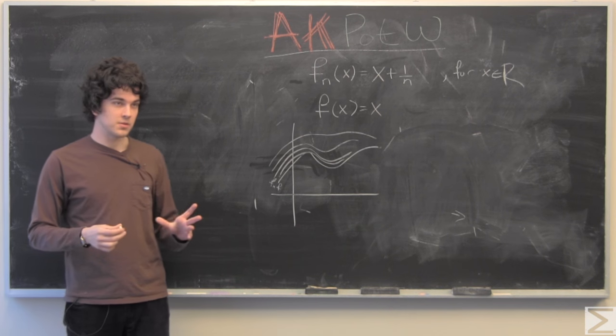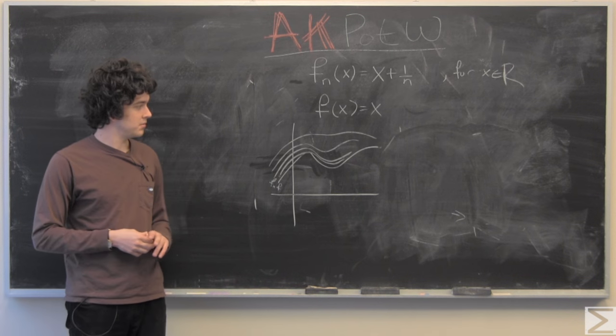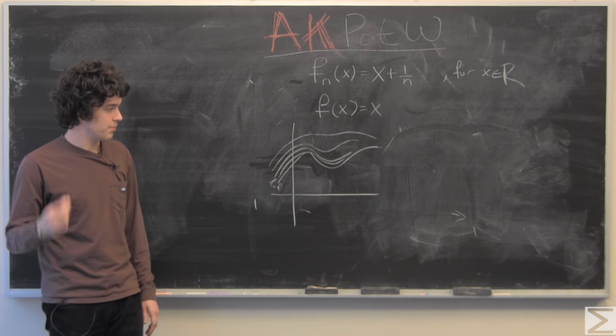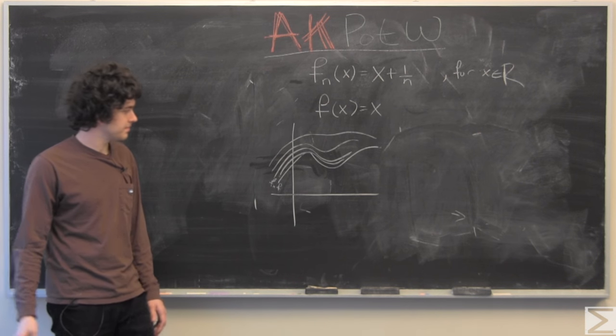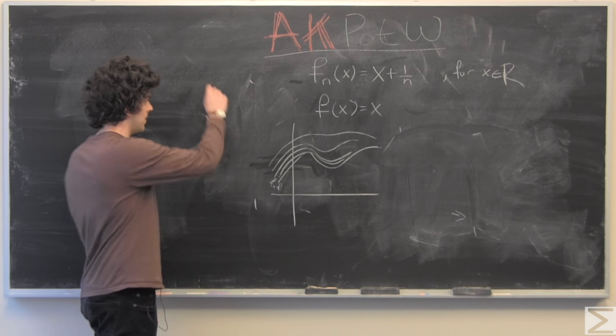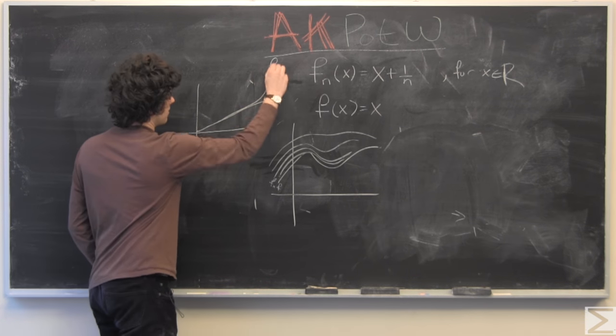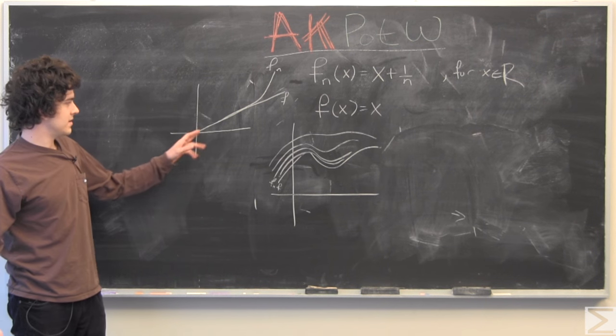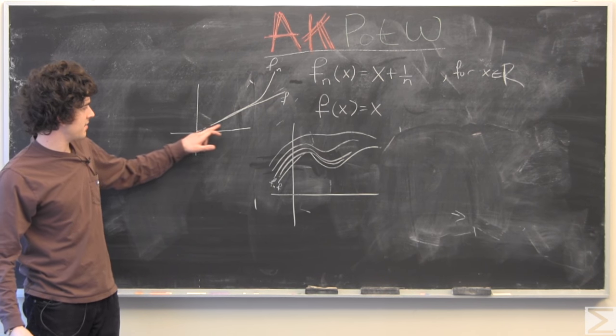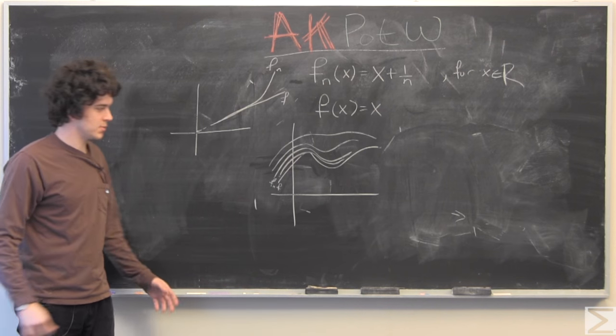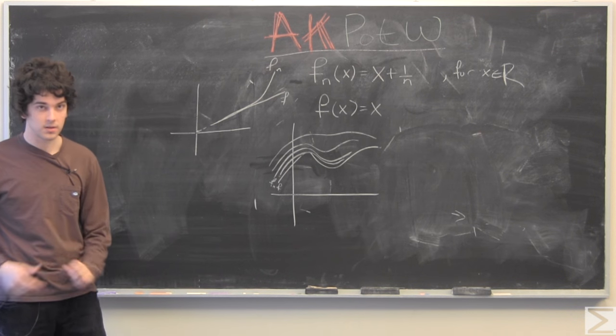And so a uniform convergence would imply a point-wise convergence, but a point-wise convergence does not imply uniform convergence, where point-wise is if you have something like this, where the f sub n goes to f, but then at a certain point kind of blows up. And that's what we'll see in our f squared case.